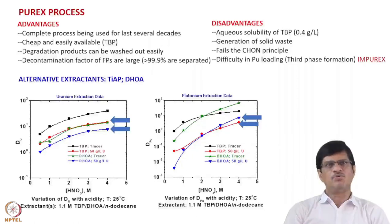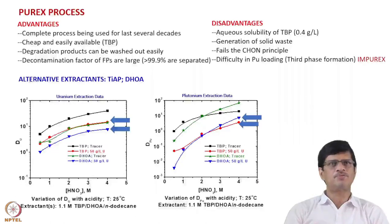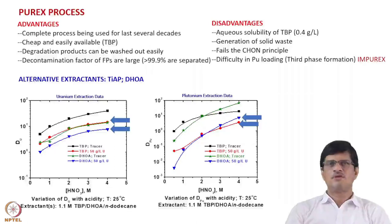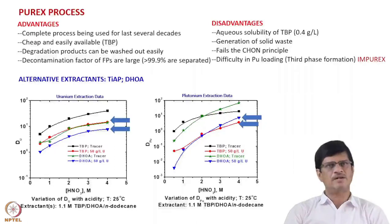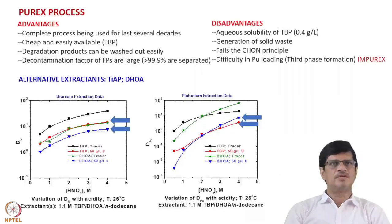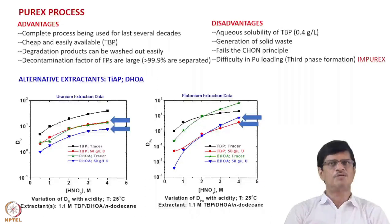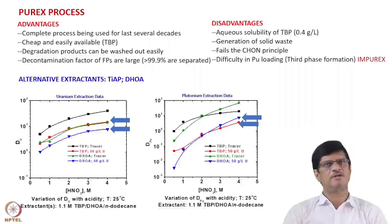This has relevance in the PUREX process. The advantages of the PUREX process are: it is a complete and mature process used for several decades, so the technology is very well known. TBP used as the extractant is cheap and easily available, which helps the economy of the process. Its degradation products — monobutyl phosphoric acid and dibutyl phosphoric acid — can be washed out easily using sodium carbonate solution. The decontamination factor for fission products is large, greater than 99.9%.